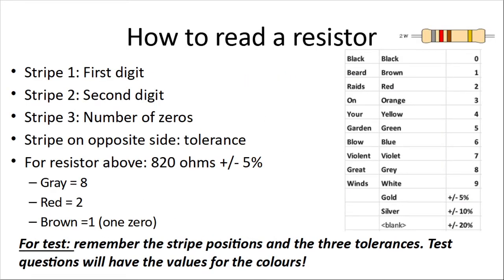How do we read the value of a resistor? The stripes on the resistors are absolutely standard. The first three give you the value of the resistor, and the last one gives you the tolerance or precision. Each color corresponds to a number — you don't need to memorize it for the test. The test will say: gray is 8, red is 2, brown is 1. The first two digits — gray and red, 8 and 2 — are the first two digits of the value. The third digit is the number of zeros. Brown is 1, so we've got 8, 2, and one zero after that — so it's an 820-ohm resistor.